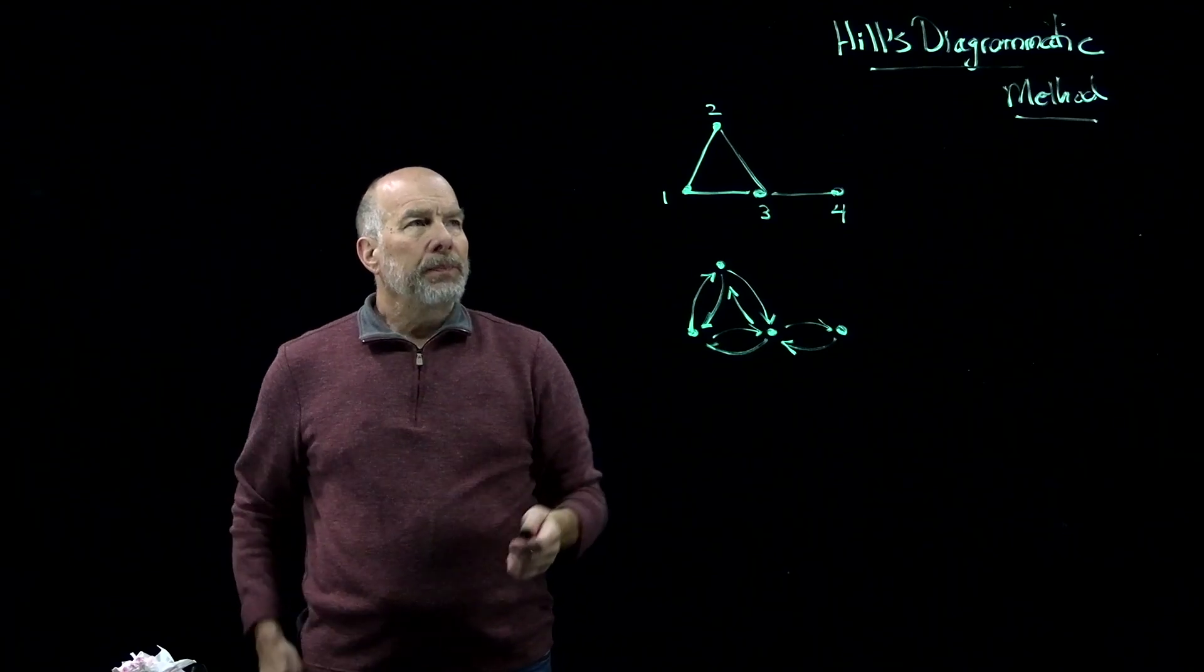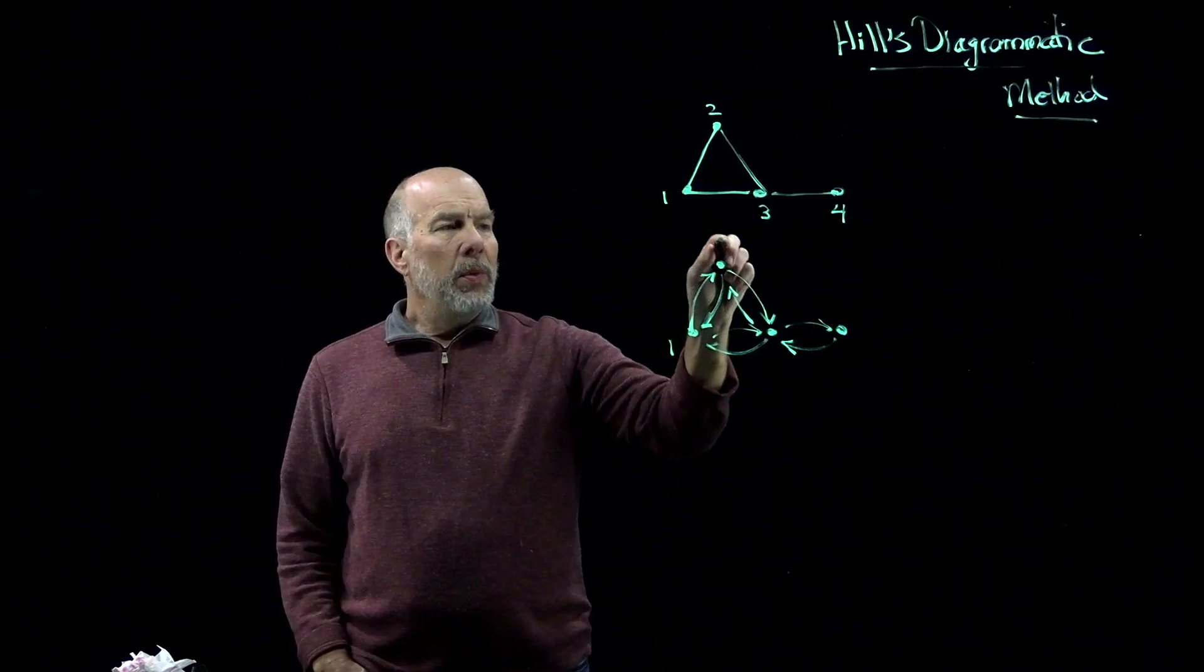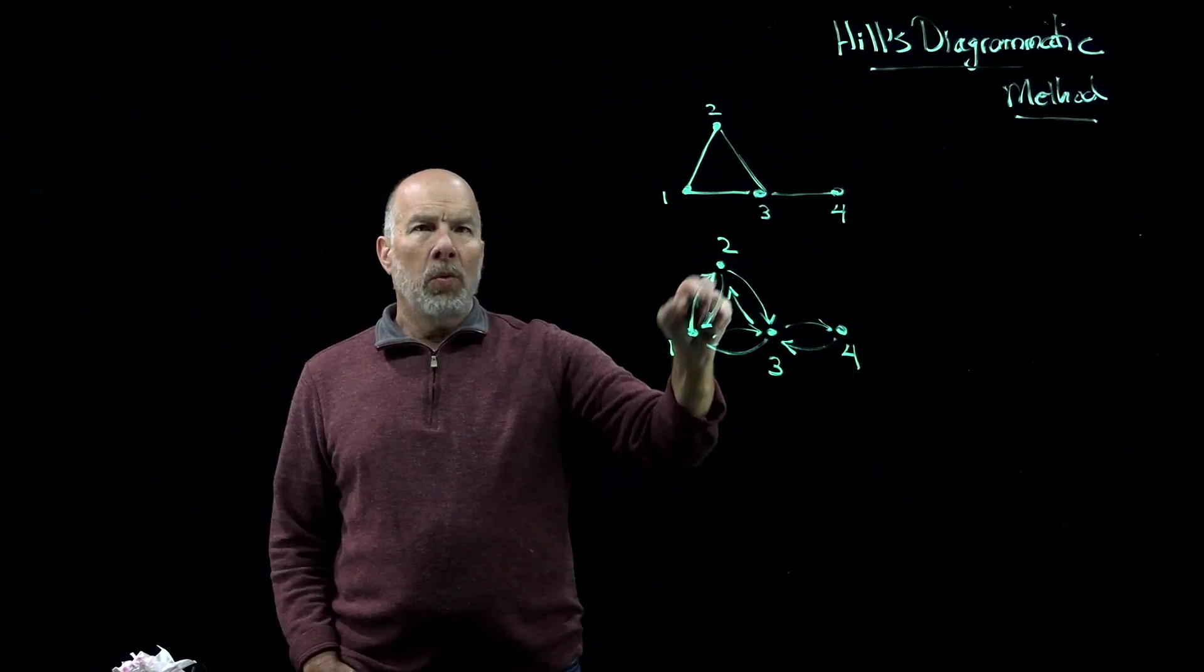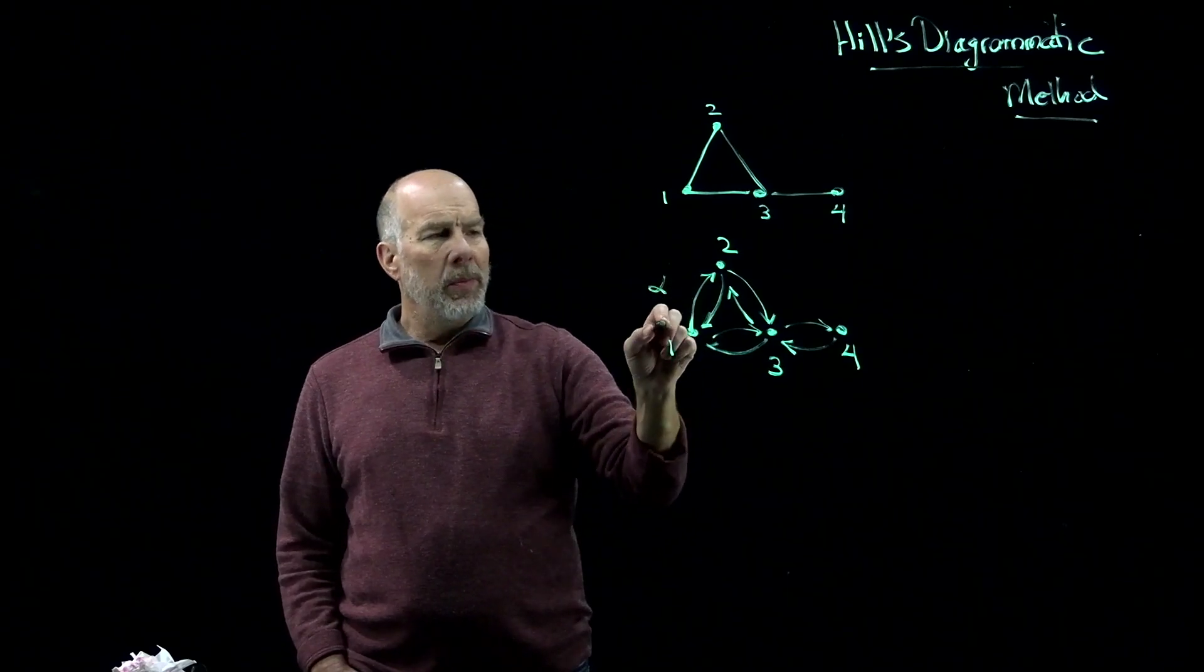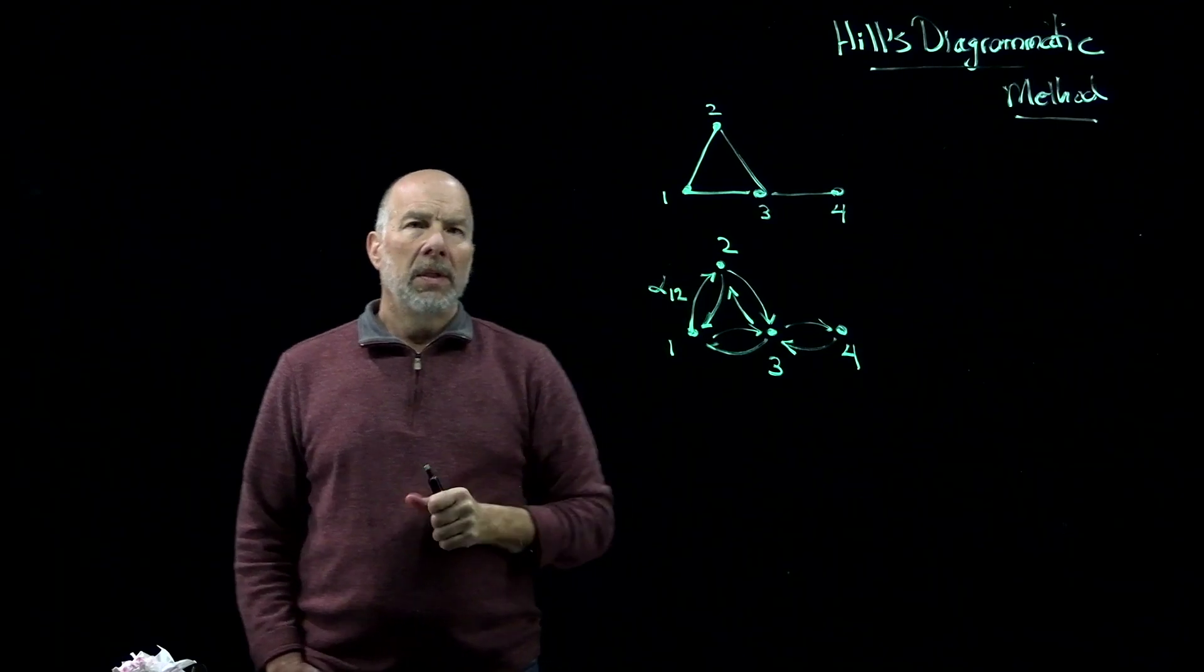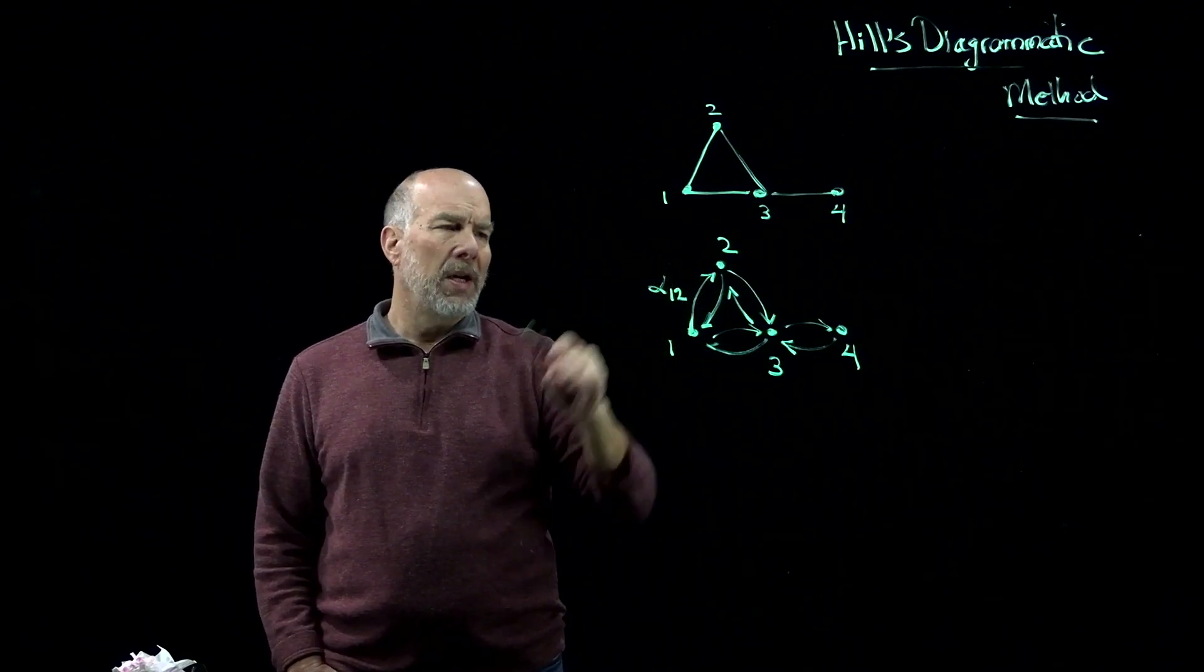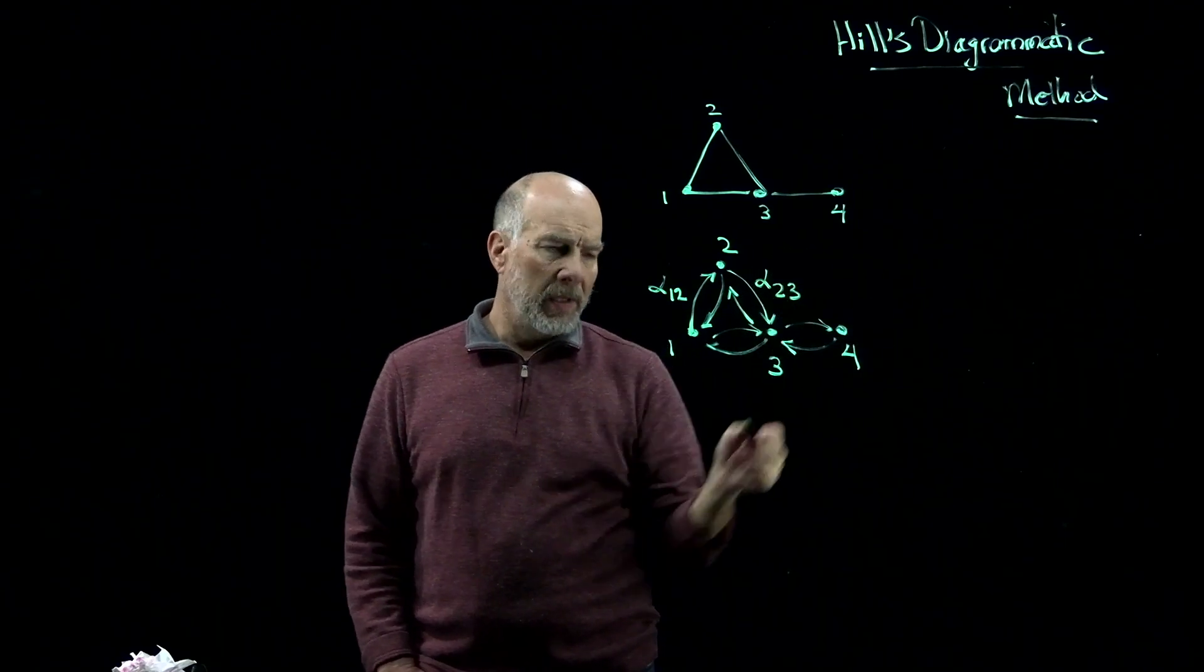Now, it's always going to be possible, if you number the states with integers, to just think about the rate constants associated with these transitions in the following way. This would be the transition rate alpha 1,2, where it's the rate of transition from state 1 to state 2. They would have units of reciprocal time. And this one, for example, would be alpha 2 to 3, and so on.